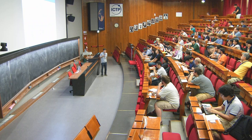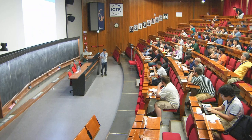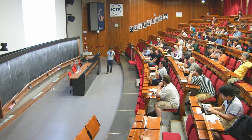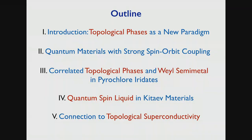The question is, what can you do about it? This is the topic of topological phases of interacting electrons in quantum materials. My outline looks like this: I'm going to give a very general introduction to topological phases of matter, and I'll use quantum materials with strong spin-orbit coupling as a platform to discover some of these topological phases discussed in the literature.